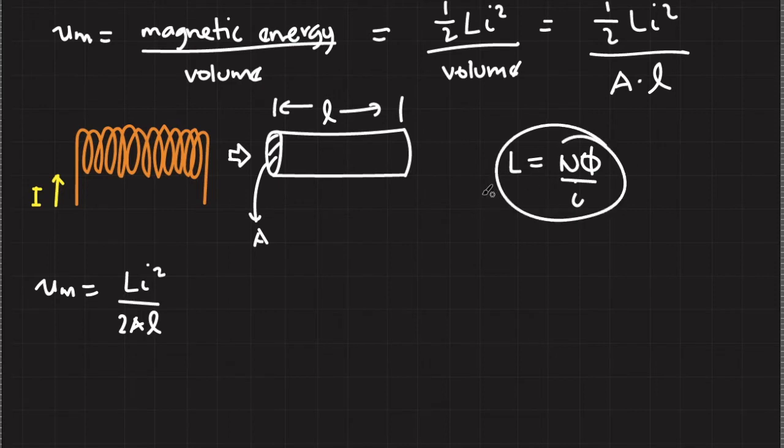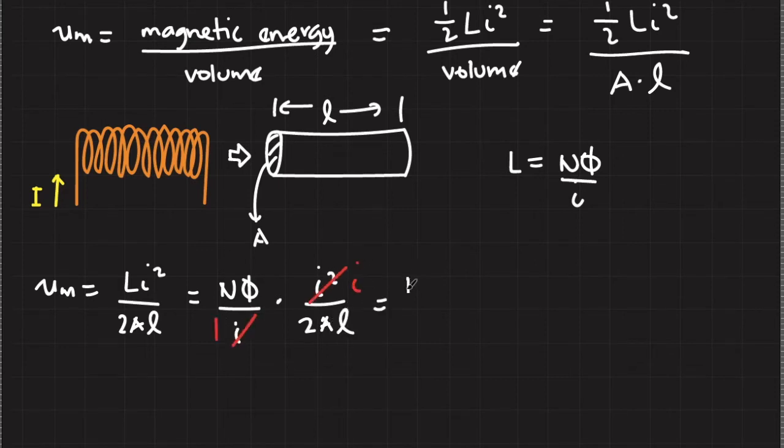So I'll end up with N phi over I times I squared over 2 A L. So this becomes I and this becomes 1. I now have N phi I over 2 A L.